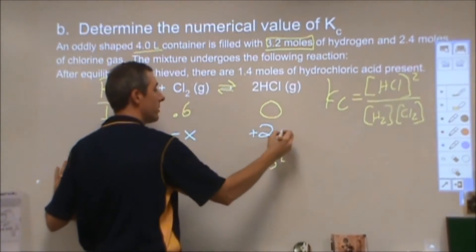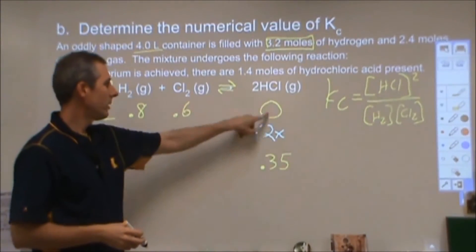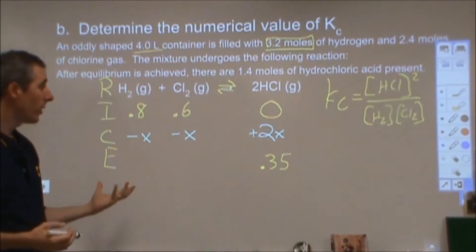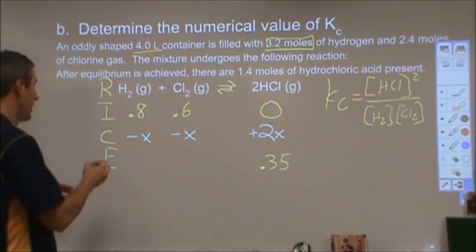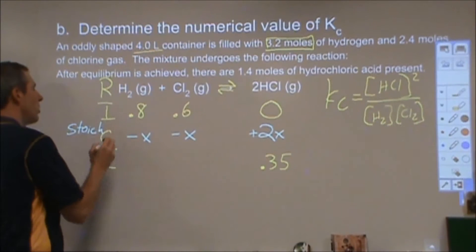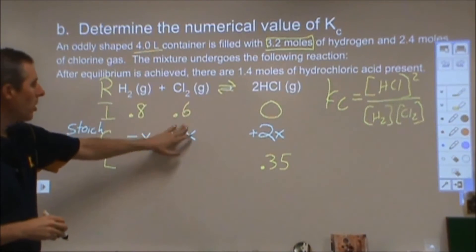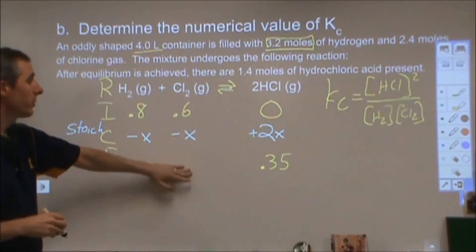So I'm going to use up so much of this and so much of this that I'm going to make double that amount for this one. By knowing the initial and final amounts of the hydrochloric acid, I can figure out what x is, how much these things change by. This step is your stoichiometry. The difference between this and a normal stoichiometry problem is that a normal stoichiometry problem, you would use up all of the chlorine. It would go 0.6 minus 0.6 and go to zero.